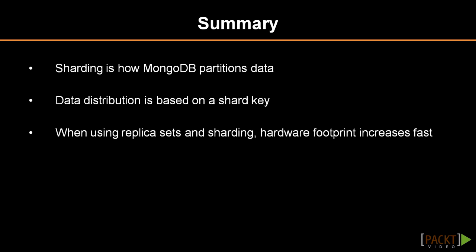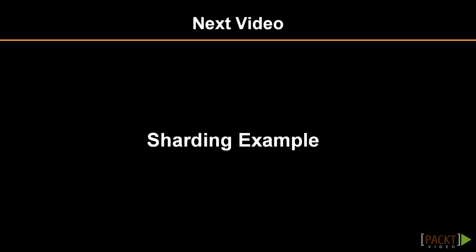This section introduced sharding in MongoDB. Sharding is how MongoDB partitions data to distribute work, and data is segmented based on a shard key. The number of servers required to set up a sharded cluster is much higher than what is required for just a replica set. The next video will present a sharding example.